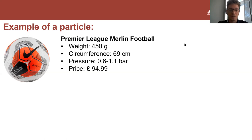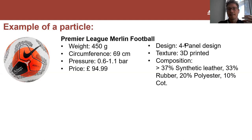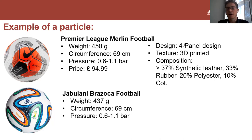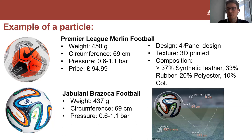We can ascribe properties to it: it has a weight of 450 grams, a circumference, it needs to have a certain pressure. There's another particle, apparently very similar - the football used for the World Cup in Brazil, the Brazuca. If we compare the obvious properties, it's very similar to the Merlin. However, if you ever had the pleasure to play with it - also called a goalkeeper's nightmare - it behaves very differently. The key property is bounciness: it's much bouncier than the other one. I put this here as an example that the obvious properties are not always the best to describe the key functionality of a particle.